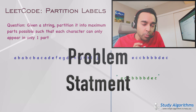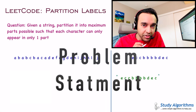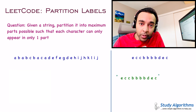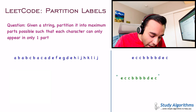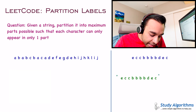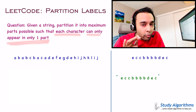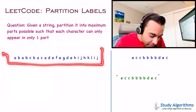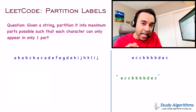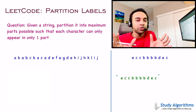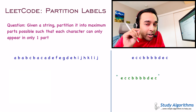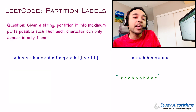Let us make sure that we are understanding the problem statement correctly. You are given a string and you have to partition it. How many partitions? You have to make the maximum number of partitions possible such that each character can only appear in one part. The condition is that if a character occurs in one partition, it cannot occur in any other partition.